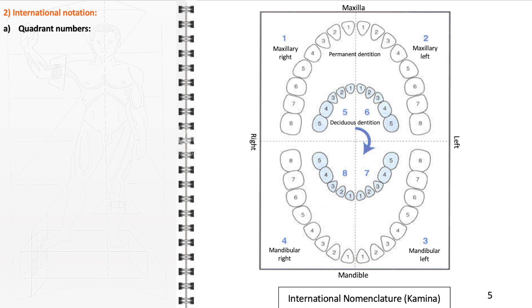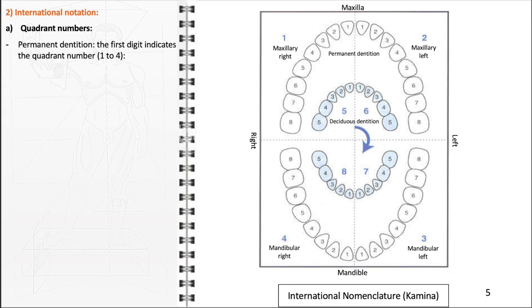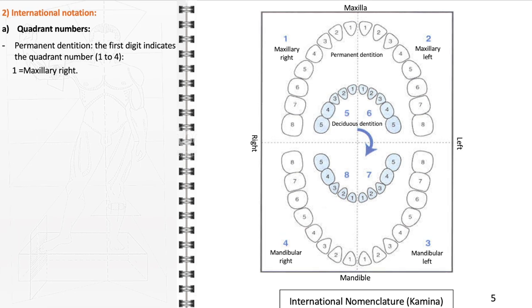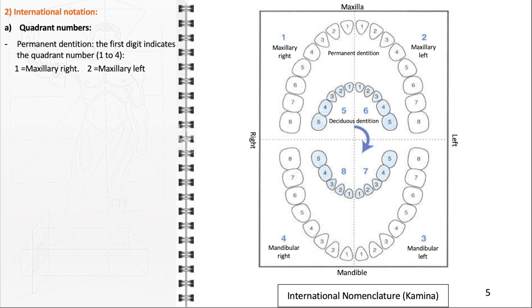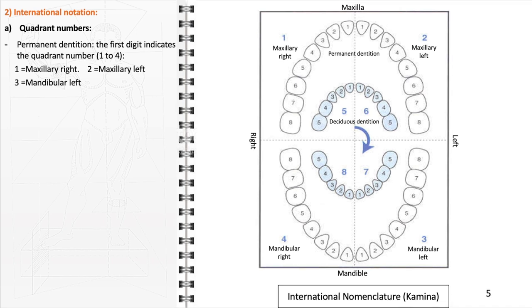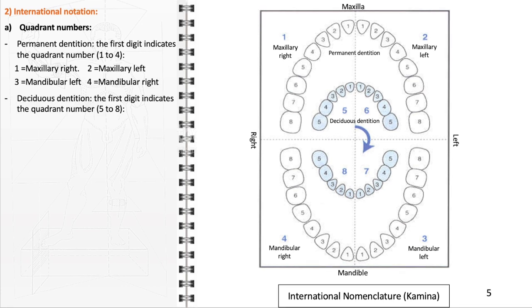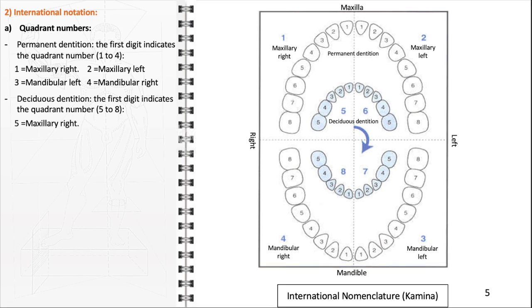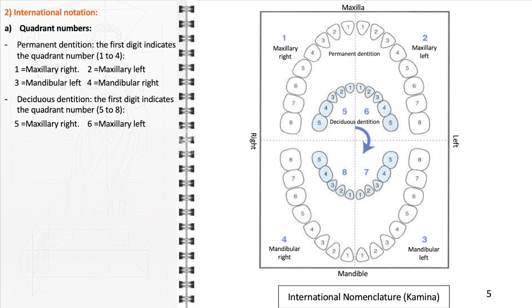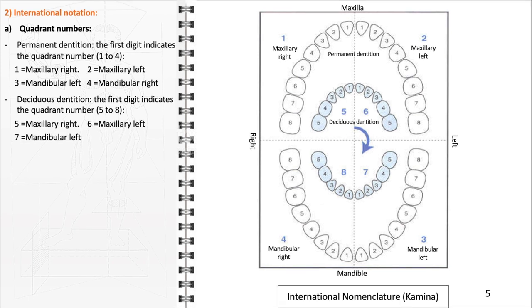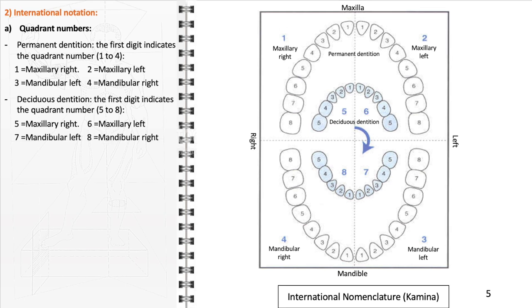In the International System of Dental Notation, teeth are identified using quadrant and tooth numbers, and this system differs for permanent and deciduous dentition. For permanent dentition, the first digit indicates the quadrant number ranging from one to four: one represents the maxillary right quadrant, two the maxillary left, three the mandibular left, and four the mandibular right. For deciduous dentition, the quadrants are numbered from five to eight, corresponding to the same positions respectively.